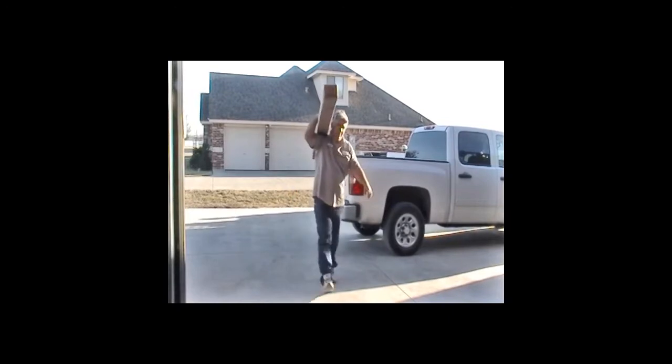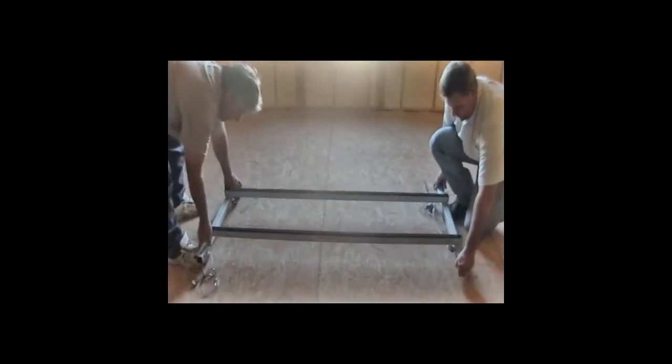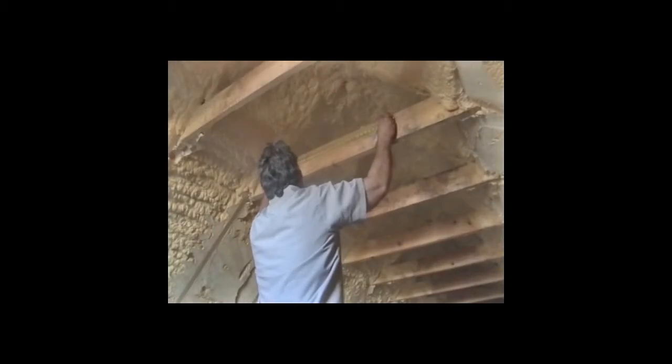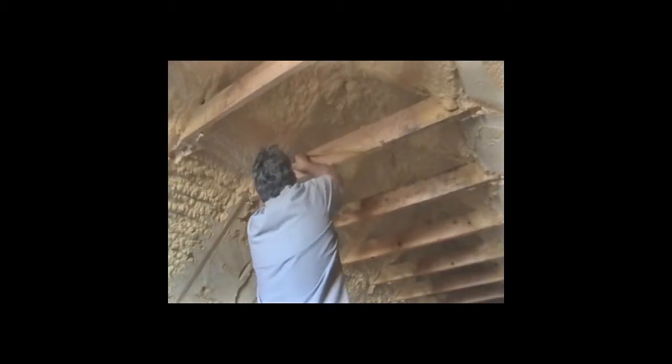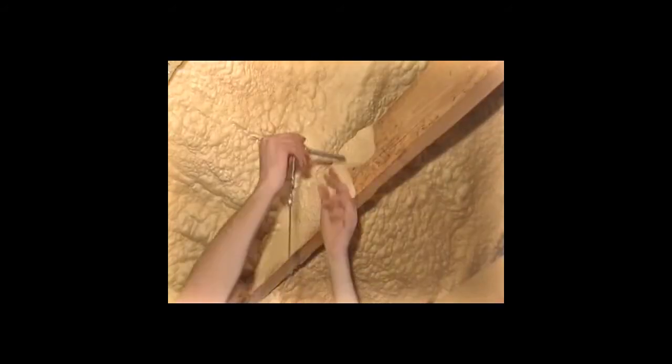Installation is quick and easy. Simply unpackage and unfold the rack. Make necessary measurements for placement of the eye bolt. Drill the hole. Insert the eye bolt.